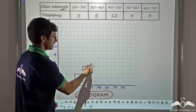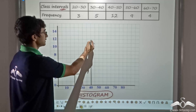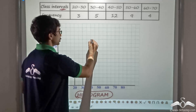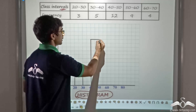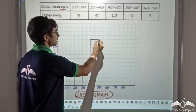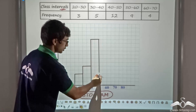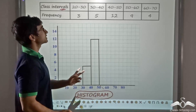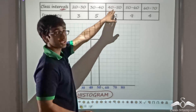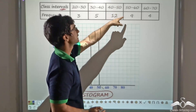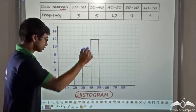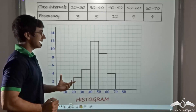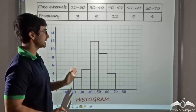I repeat this procedure for the next class, starting from where the previous bar ended and continuing till frequency 12. Again I draw a horizontal line and a vertical line to meet the x-axis at 50, which is the upper class limit for the third class and the lower class limit for the next class. Continuing in this way, I get the complete histogram.